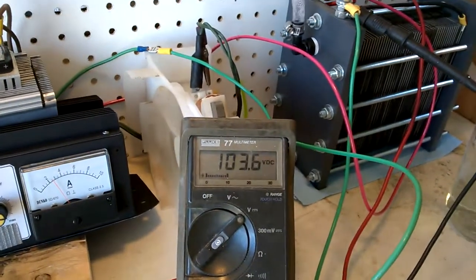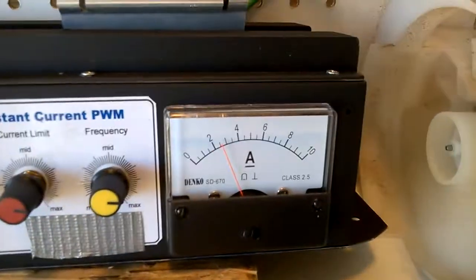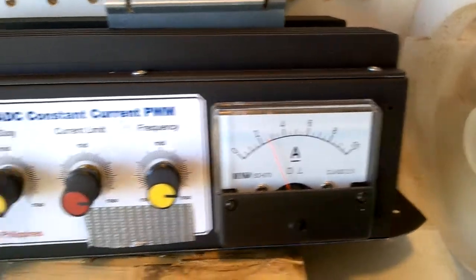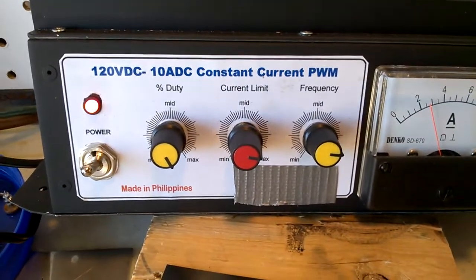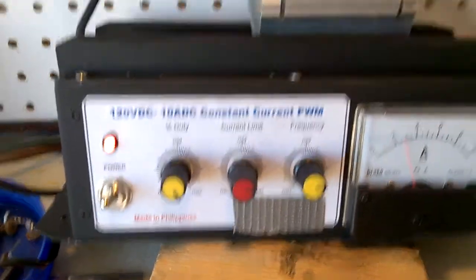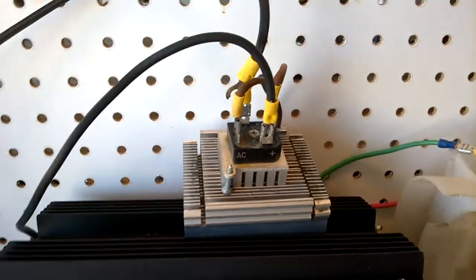As you can see. All right, that's it for this video. I don't want to make it too long. 103.6, two and a half amps. There's my settings for the PWM. There's my full wave bridge rectifier.